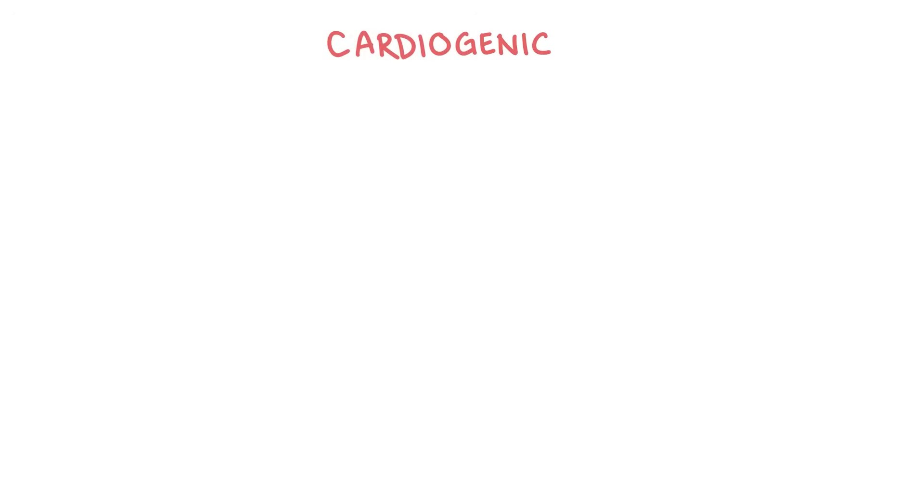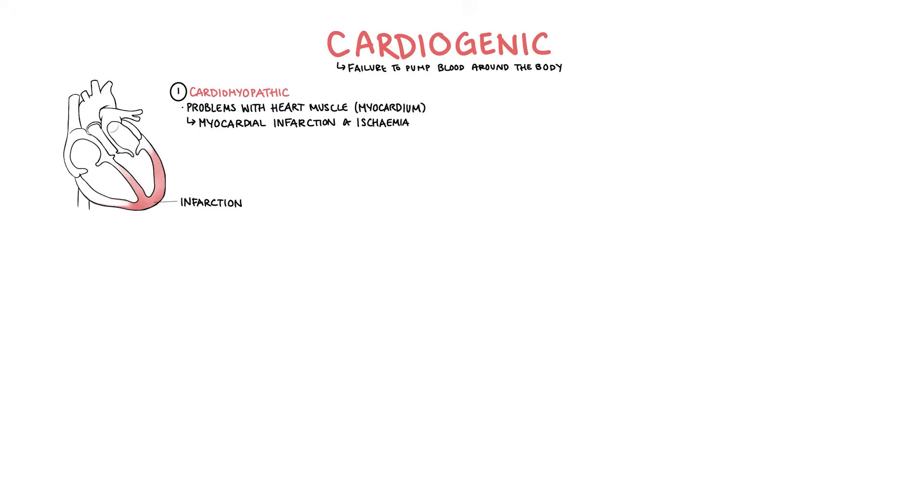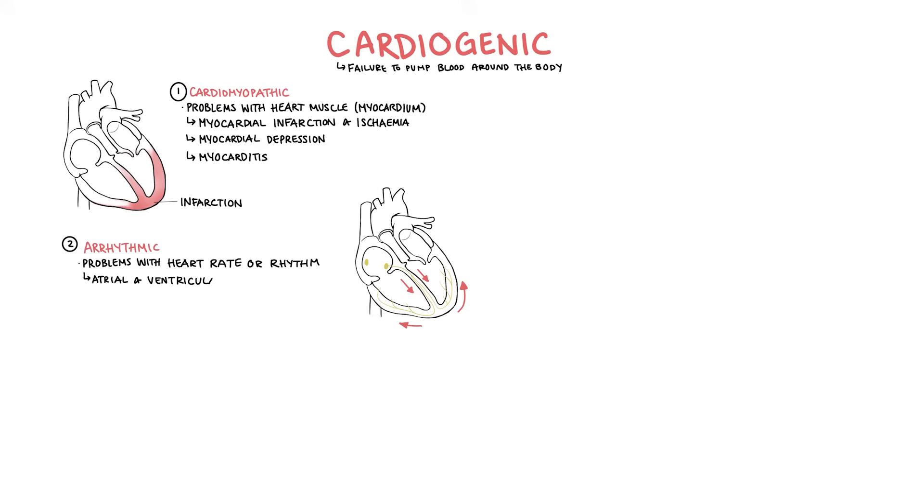Cardiogenic shock is caused by the heart's failure to pump blood around the body. There are many causes of cardiogenic shock which can be divided into four main categories. Cardiomyopathic involves problems with the heart muscles, the myocardium. These can include myocardial infarction and ischemia, myocardial depression and myocarditis. Arrhythmic causes, problems with the heart rate or rhythm. This can include atrial and ventricular tachyarrhythmias or atrial and ventricular bradyarrhythmias.